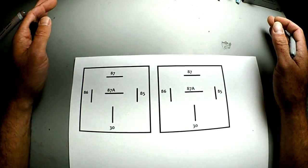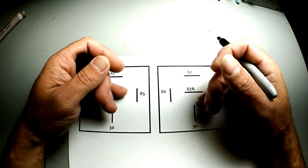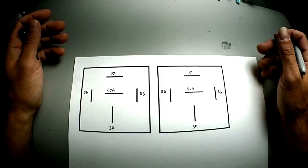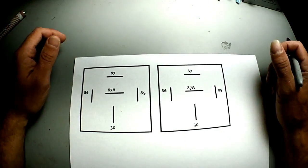Now understand you only need two relays to run whatever, four door locks, two door locks, one door lock, whatever. Let me show you.